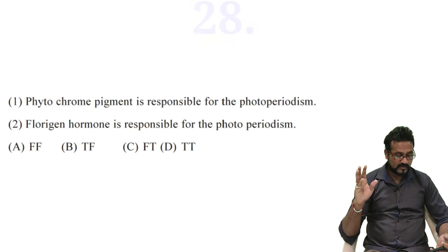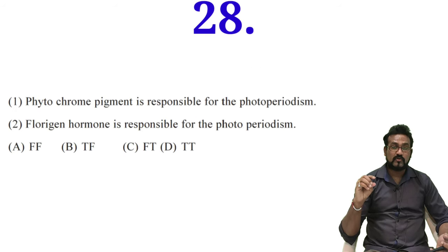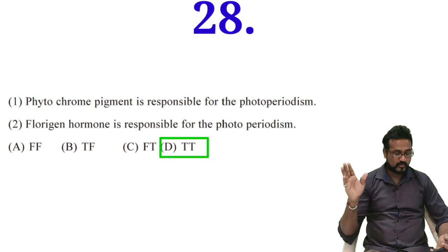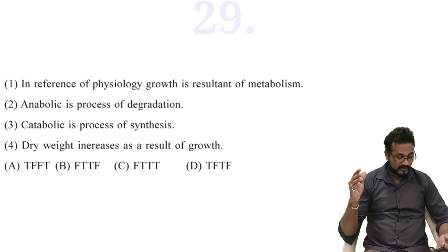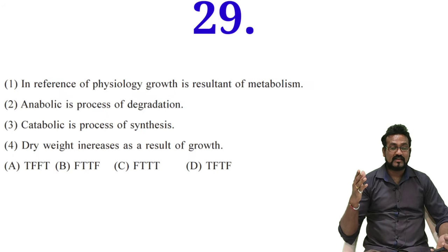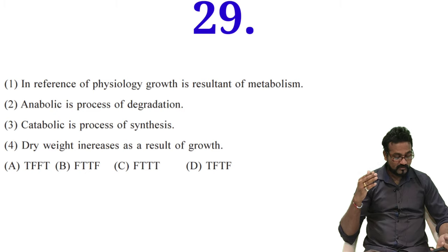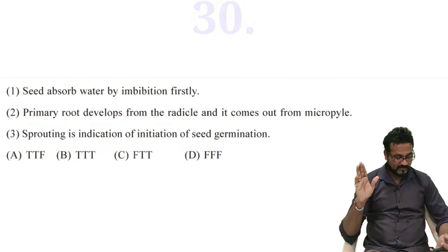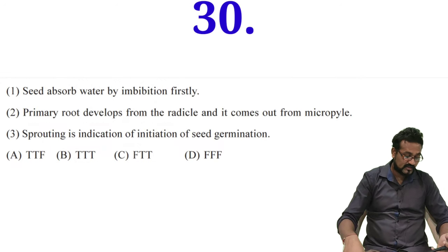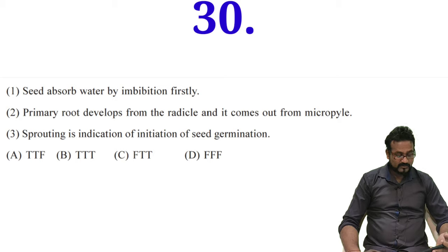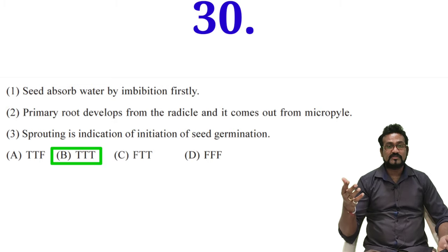28th answer is true or false regarding the first sentence - phytochrome pigment is responsible for photoperiodism. Florigen hormone is responsible for photoperiodism. Both sentences seem to be correct. So yes, D, true true, both sentences are true. This is somewhat complicated 29th question - there are four sentences given, out of them you have to pick which sentences are true or false. Pause the video and read it carefully. The last question is 30th question. Out of three options which is true and which is false we have to notice here. It was the B option where all sentences are true.